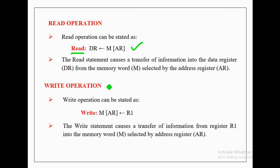Let us now discuss how a write operation can be stated in RTL with an example. The meaning of the given register transfer statement is that data is transferred from register R1 to memory at the address specified by the address register, provided that the write signal of the memory unit must be active.